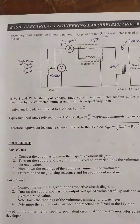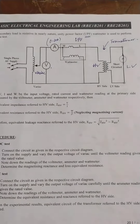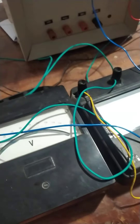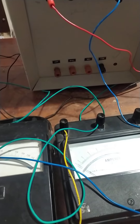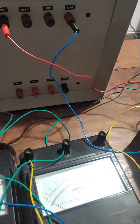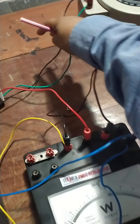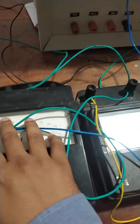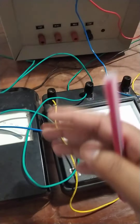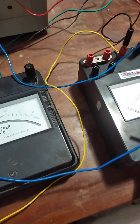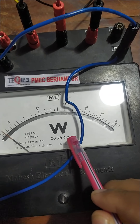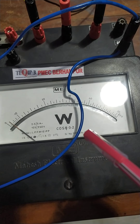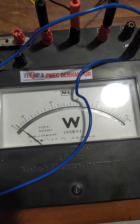The setup is ready for the open circuit test. We have kept the high voltage side open and connected the setup on the low voltage side. From the variac it goes to the voltmeter, then to the ammeter and wattmeter. You can see the wattmeter is marked with cos φ equal to 0.2, which confirms this is a low power factor wattmeter.